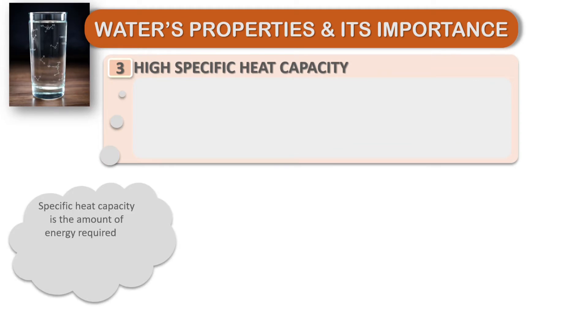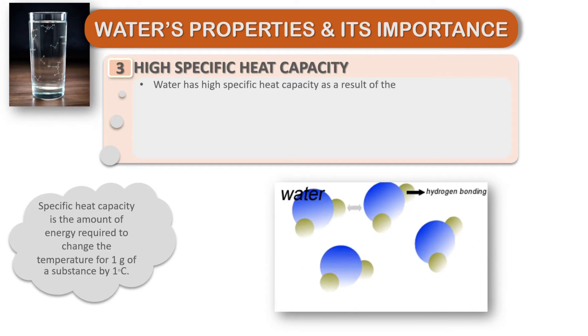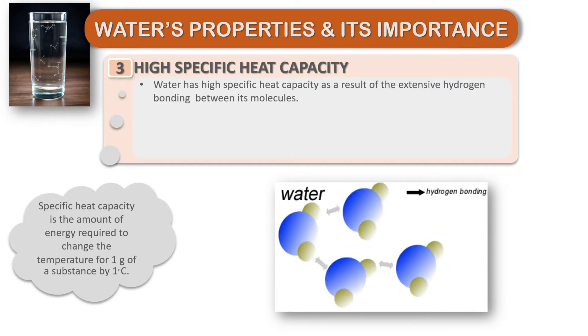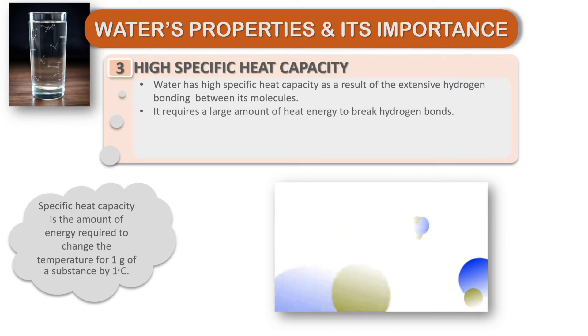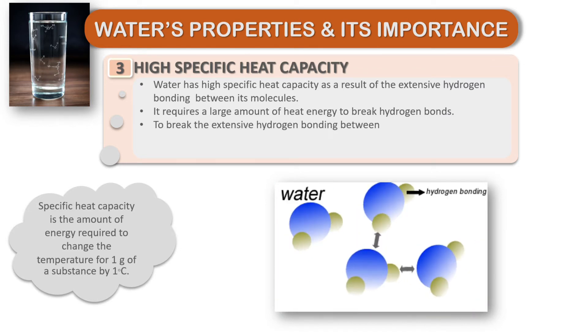Water has high specific heat capacity. Specific heat capacity is the amount of energy required to change the temperature of one gram of a substance by one degree Celsius. Water has high specific heat capacity as a result of extensive hydrogen bonding between its molecules. It requires a large amount of heat energy to break hydrogen bonds.